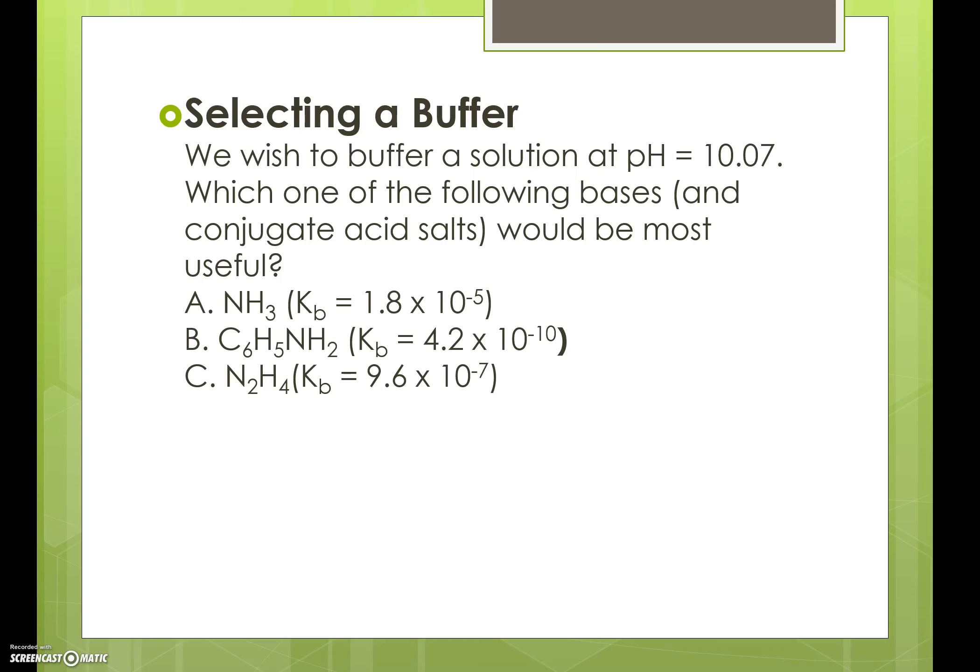When selecting a buffer, the pKa of the buffer should be as close as possible to the desired pH of the solution. This particular question says we want to make a buffer solution with a pH of 10.07, and we're given three possible choices for bases and their conjugate acid salts.